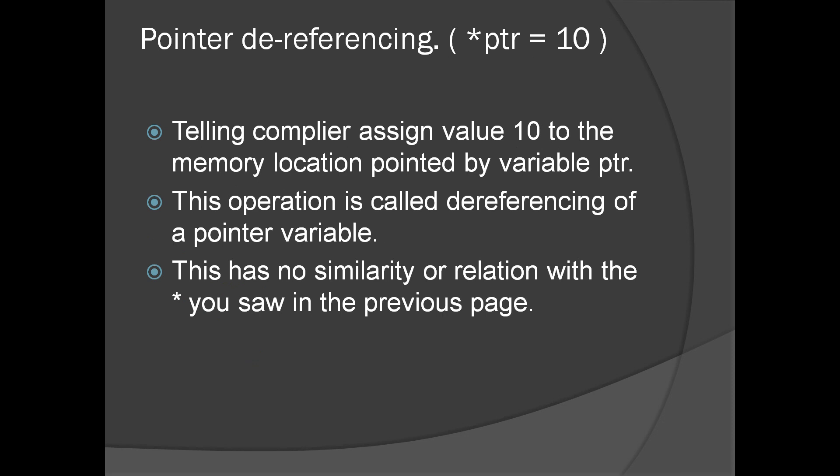The third use of the star operator is pointer dereferencing. In this scenario, what we are doing is telling the compiler to assign value 10 to the memory allocated and pointed to by the variable PTR. It's not a declaration — we are telling the compiler to assign a value to that particular memory location. This operation is called dereferencing of a pointer variable, and it has no similarity or relation with the star operator used in pointer declaration.